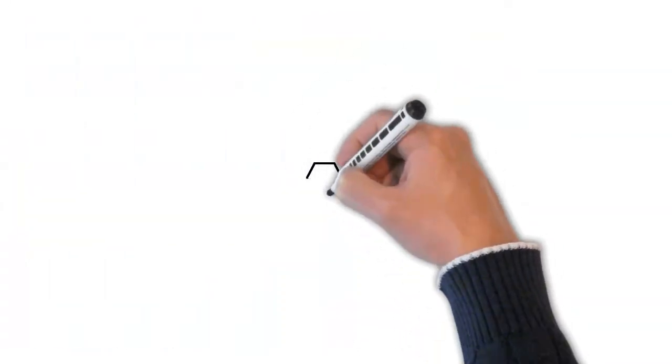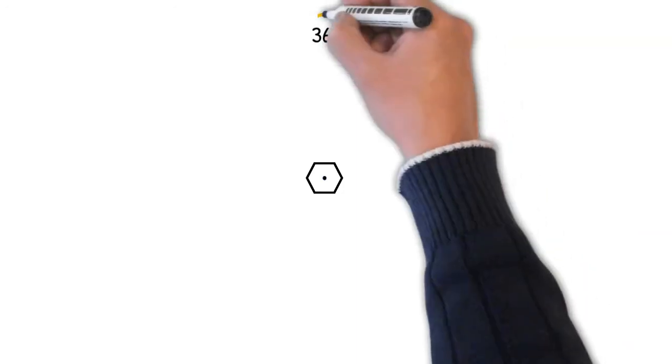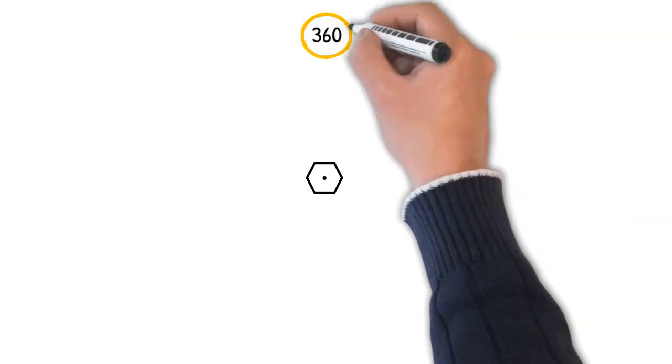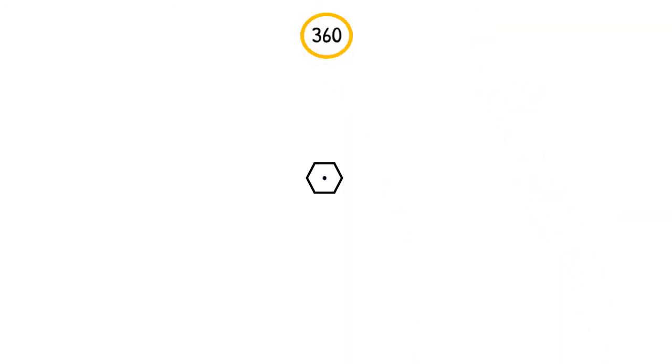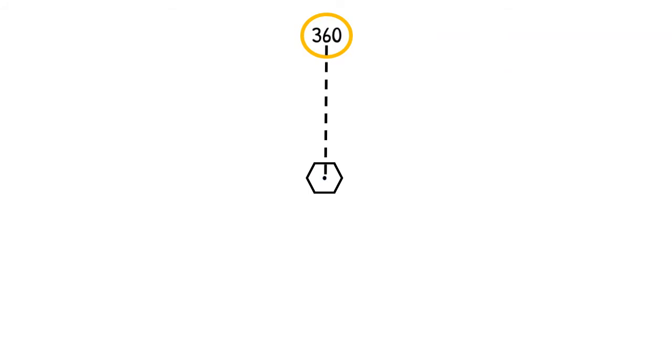We're going to draw our VOR again. And for simplicity's sake, we're just going to use the 360 radial. I circled 360 because that's what we're going to select in our OBS when we're trying to navigate to this radial. Remember, the radial begins at the VOR, extends to infinity to the north. Of course, the limitation there is radio reception capability. Now, I know you're going to call me a liar. I'm going to draw a line south of the VOR just to demonstrate how we determine whether we're left or right of course. And I'm only doing this for illustration purposes.